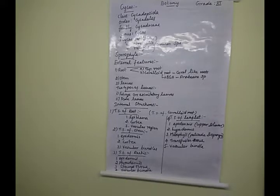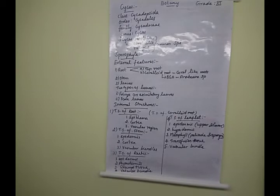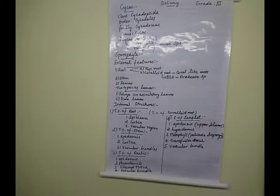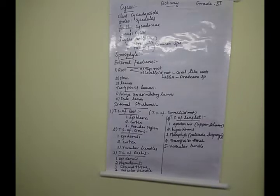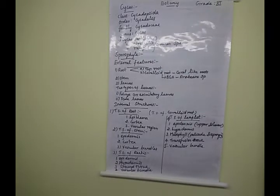The plant body of Cycas is a sporophyte in nature, just like a small palm-like appearance. The plant is evergreen type and is a xerophyte in nature. The sporophyte can be clearly differentiated into root, stem, and leaf regions.